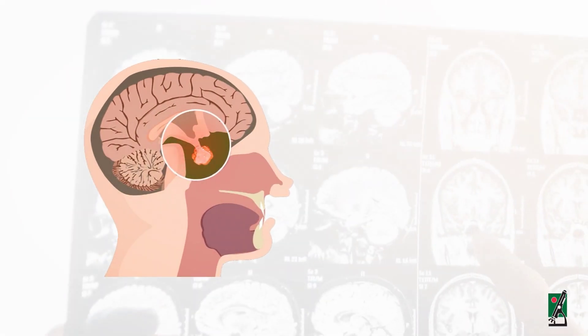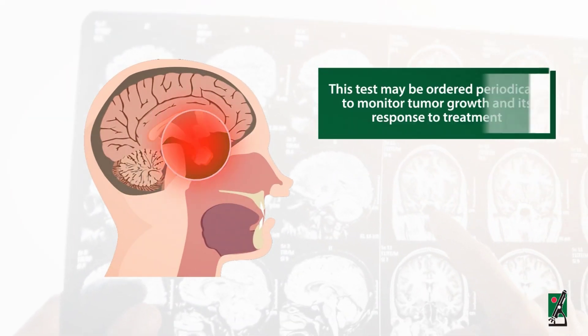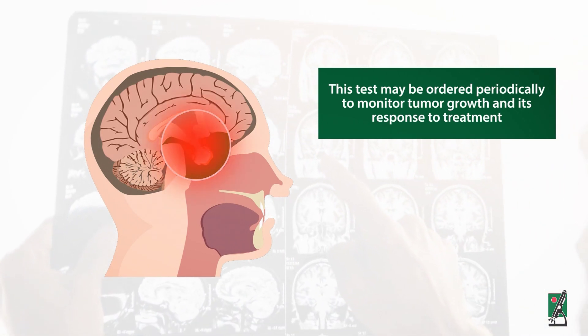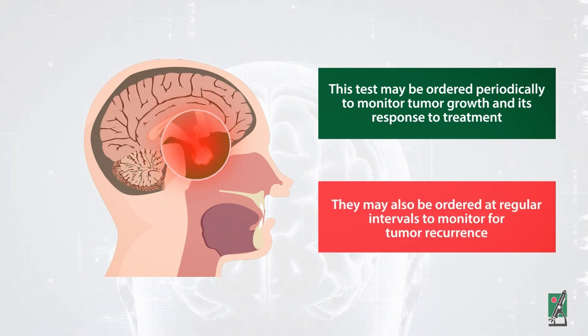When a person has a tumor that produces prolactin, this test may be ordered periodically to monitor tumor growth and its response to treatment. It may also be ordered at regular intervals to monitor for tumor recurrence.